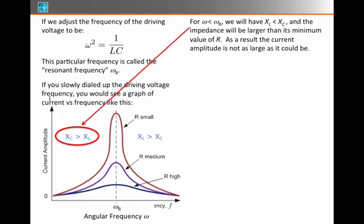Remember that when omega is less than omega sub R, we'll have XL less than XC, and the impedance will be bigger than its minimum value of R. As a result, the current amplitude won't be all that large.